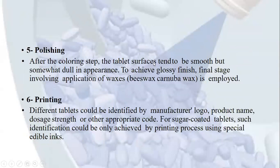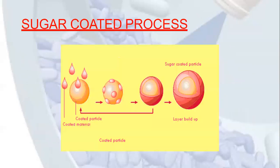After the coloring step, tablet surfaces are somewhat dull in appearance. To achieve a glossy finish, the final stage involves application of waxes such as beeswax or carnauba wax. For printing, different tablets can be identified by manufacturer logo, product name, dosage strength, or other appropriate codes. For sugar-coated tablets, such identification can only be achieved by printing using special edible inks.